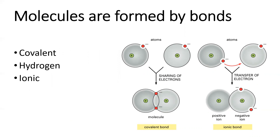Molecules are formed by bonds. When we go from atoms to molecules, we introduce a new characteristic — bonds. When you had atoms there were no bonds; now molecules have bonds. We're going to talk about three different types of bonds today, and we'll continue discussing bonds throughout the semester because building and breaking bonds is what we call metabolism — organism metabolism is super important.